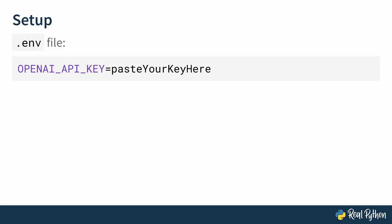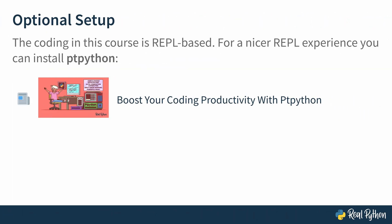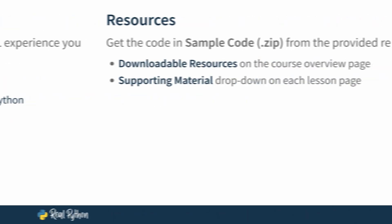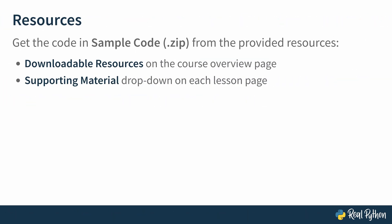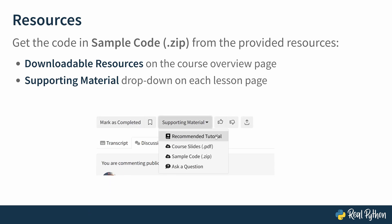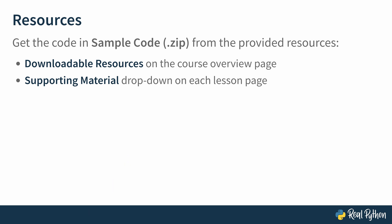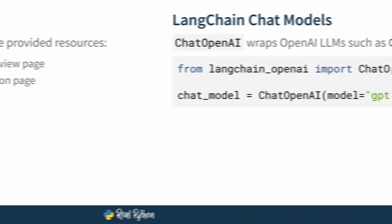I want to mention one more optional dependency: ptpython, which is an alternative Python REPL. I'll be using the REPL heavily in this course, and ptpython provides a nicer experience with better syntax highlighting, so it'll make it easier to follow along. You don't have to install it — feel free to use the built-in Python REPL or work in scripts. Finally, you can get the sample code from the downloadable resources on the course overview page or from the supporting material dropdown under each lesson video. With this, you're ready with the setup, and in the next lesson you'll start looking at Langchain chat models.